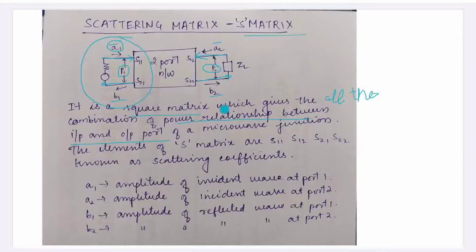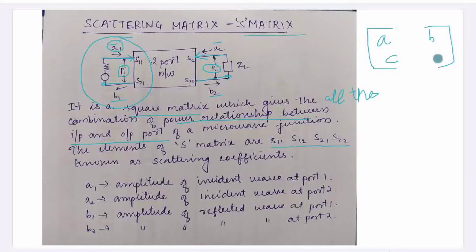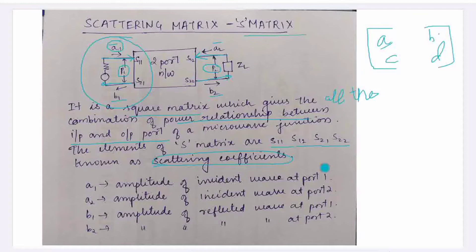The S-matrix gives the combination of power relationship between input and output port of a microwave junction. The S-matrix elements are S11, S12, S21, and S22. In matrix form, these correspond to elements A, B, C, D — four elements in a square matrix. These are the scattering coefficients. The S-matrix is basically a square matrix used to give all possible combinations of power relationship between input and output of a microwave junction.